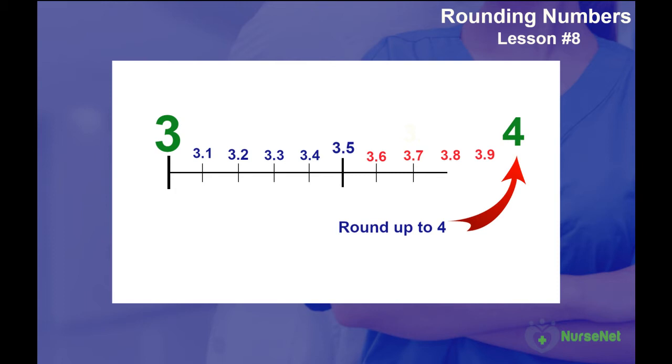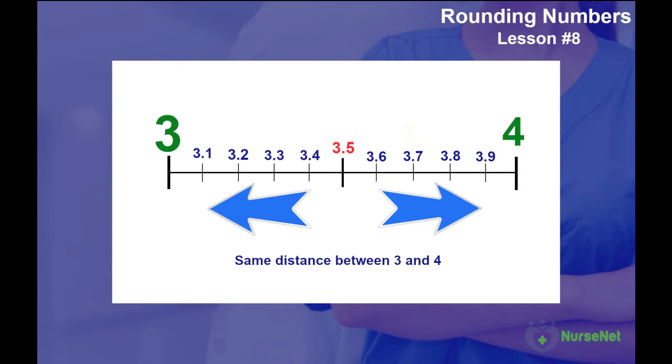We've deliberately left out 3.5, as it's exactly the same distance between the whole number 3 and the whole number 4. Well, in maths, the 5 is deemed to be closer to the 4. Therefore, we round up to 4, rather than rounding down to 3.